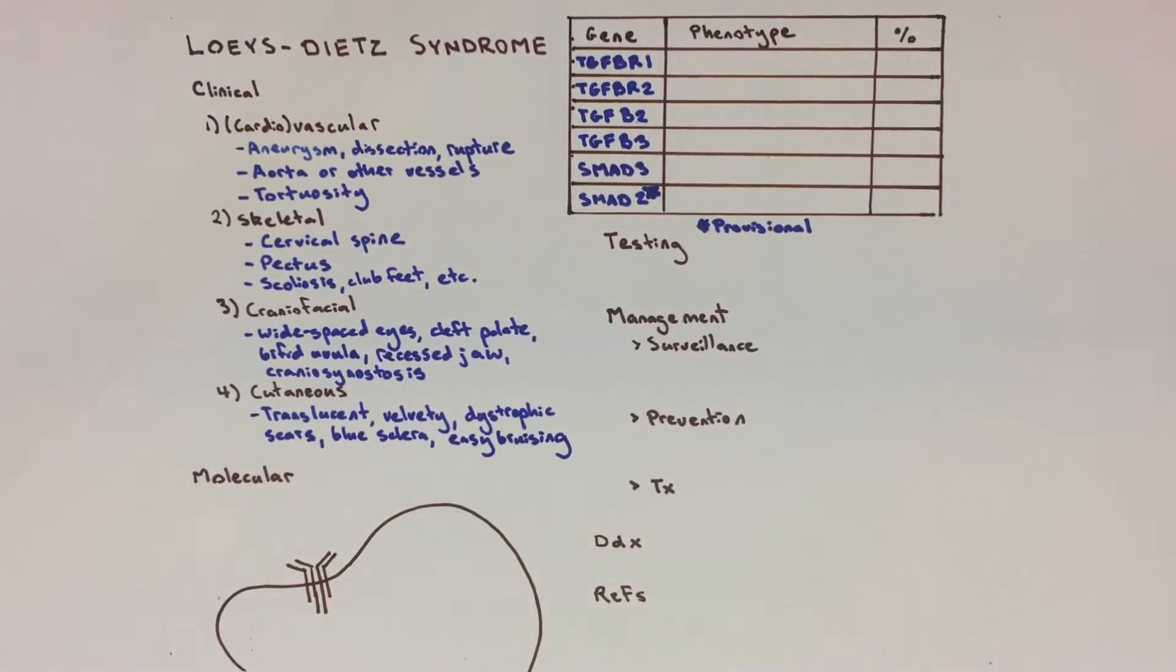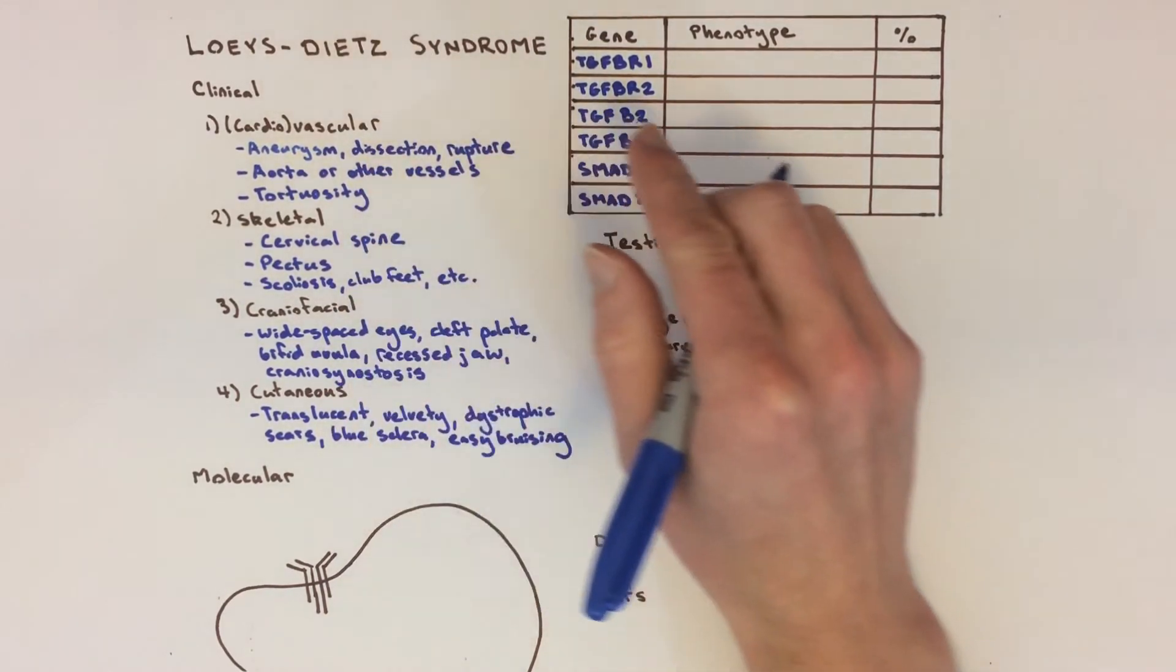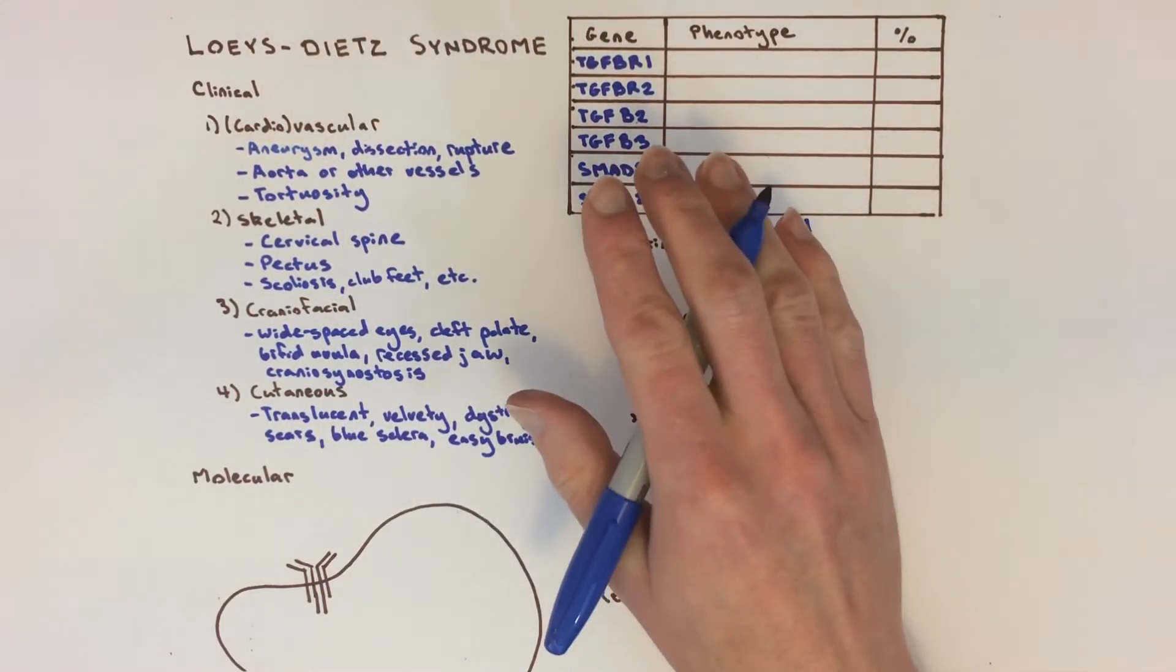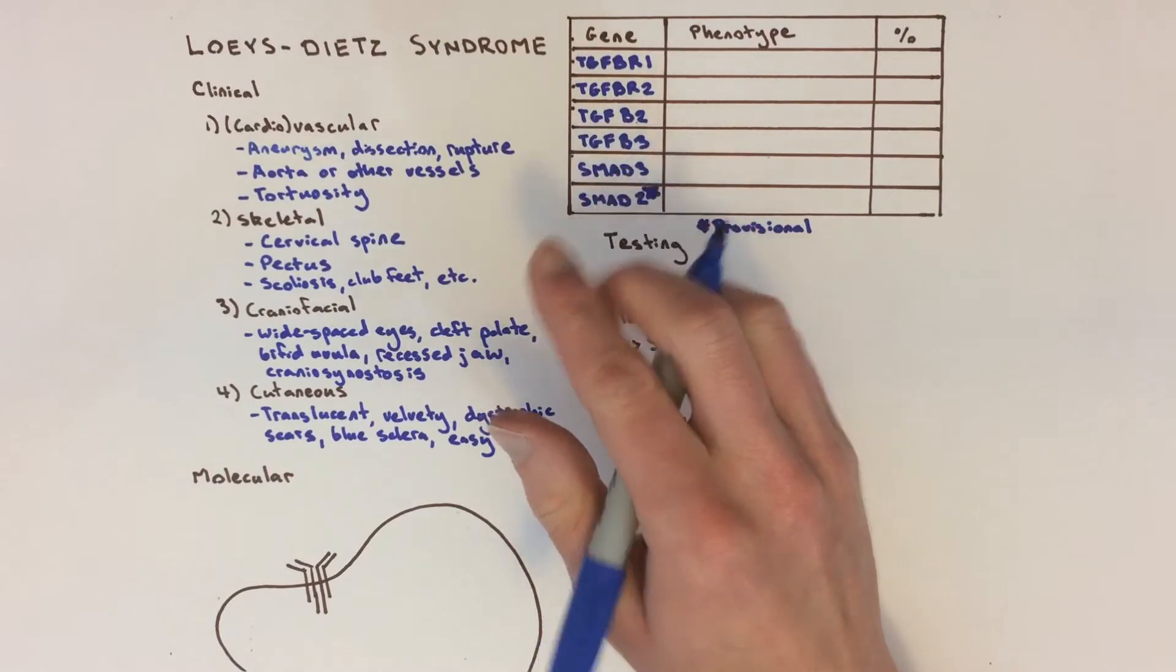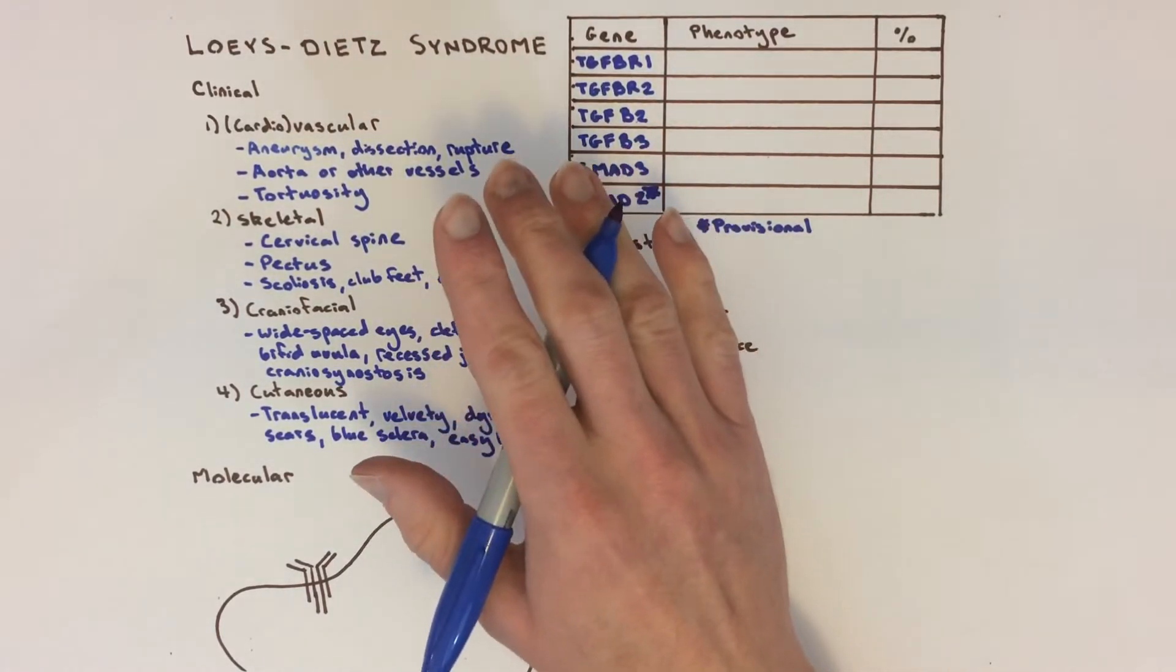The features of Loeys-Dietz syndrome that don't fit into the categories above include food allergies that can progress to inflammatory conditions of the esophagus or bowels, eczema, asthma, short-sightedness, and retinal detachment.